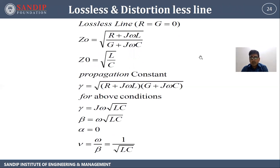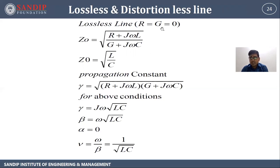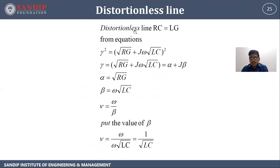Lossless and distortionless lines: for a lossless line, R = G = 0, so Z₀ = √(L/C), gamma = jω√(LC), α = 0, β = ω√(LC), and v = 1/√(LC). For a distortionless line, the condition is RC = LG. Then α = √(RG), β = ω√(LC), and v = ω/β = 1/√(LC).